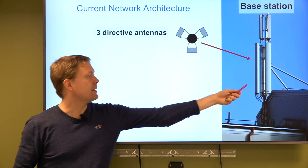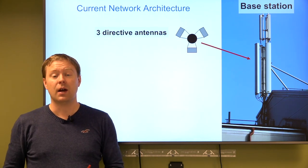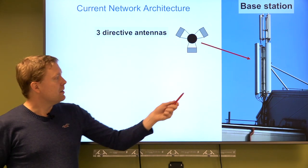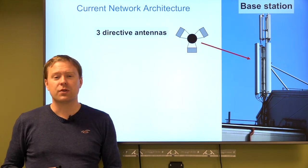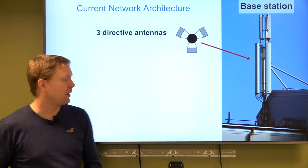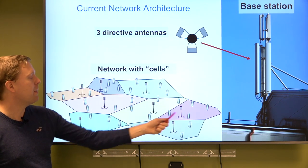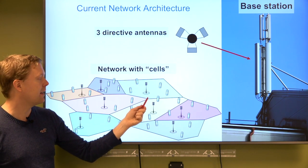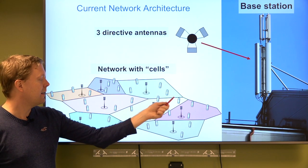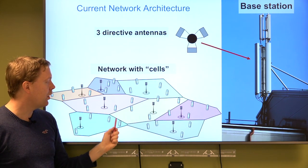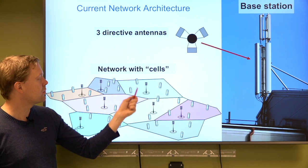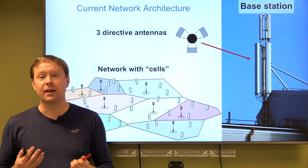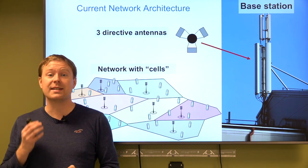Each antenna is supposed to cover 120 degrees horizontally and send the signal down to the ground where the users are. The signals are even more directive towards the middle of those 120 degrees. Since you cannot reach every user from one tower, you put up many of them. Each user measures signal strength to different towers and connects to the closest one. These coverage areas are called cells, which is why the technology is called cellular technology.